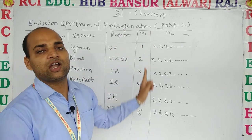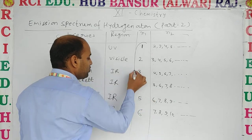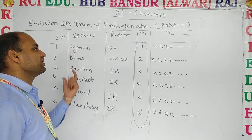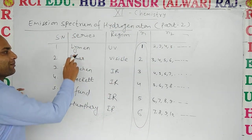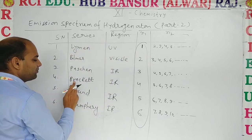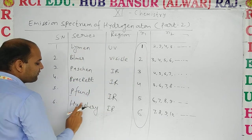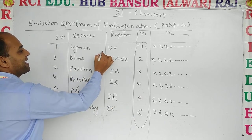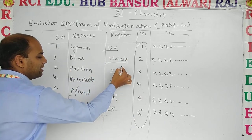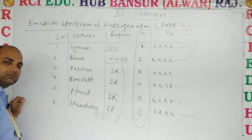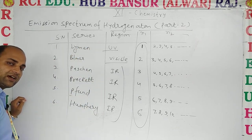This is the tabulation of different types of spectral series with their region and n1 and n2 values. The n1 value is fixed for each series: Lyman → n1=1, Balmer → n1=2, Paschen → n1=3, Brackett → n1=4, Pfund → n1=5, Humphrey → n1=6. Regarding regions: Lyman is UV, Balmer is Visible, and the remaining series are all in the infrared (IR) region.